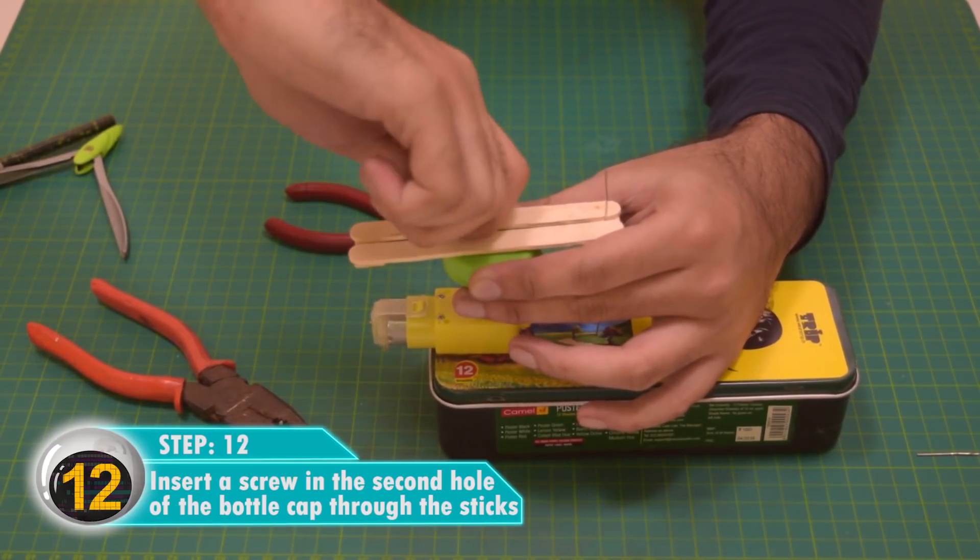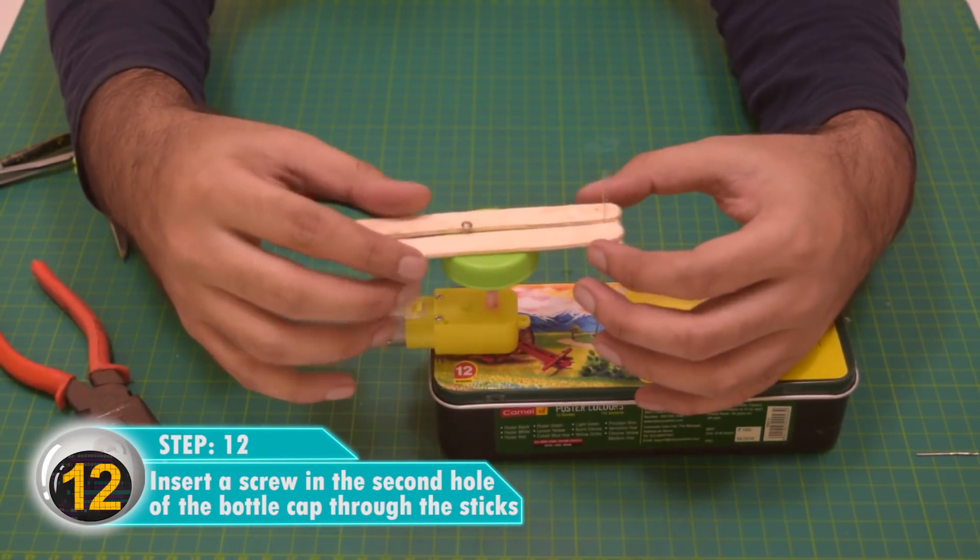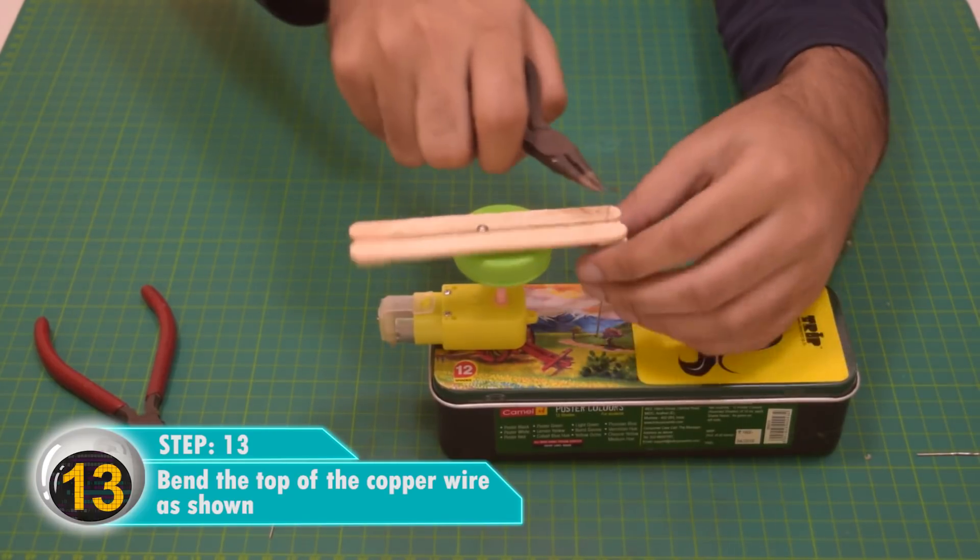But the other sticks are going to be stuck to the screw? No, they can move freely along the bottle cap. Bend the top of the wire as shown.